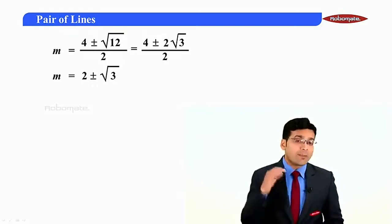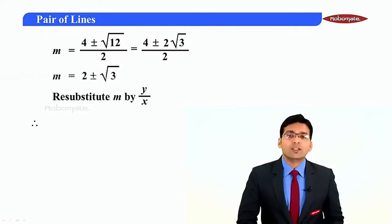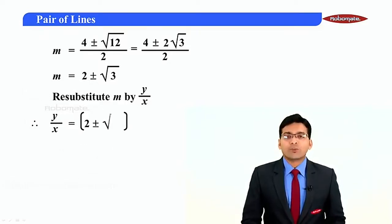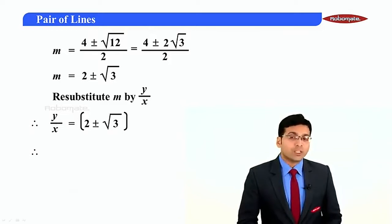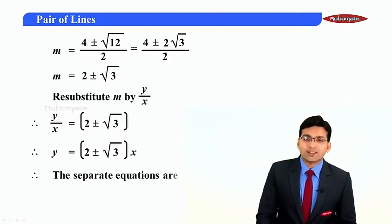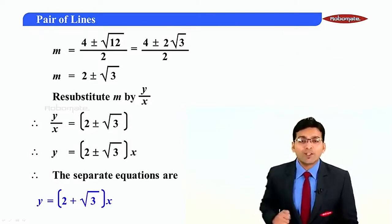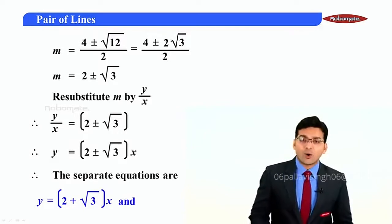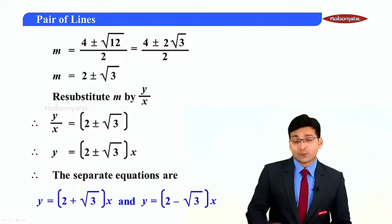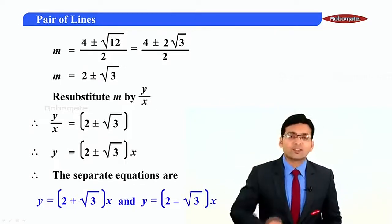We assumed y/x = m, so resubstituting gives y/x = 2 ± √3. This gives two answers. Therefore, the separate equations are y = (2 + √3)x or y = (2 - √3)x. This is how we find the separate equations of two lines.